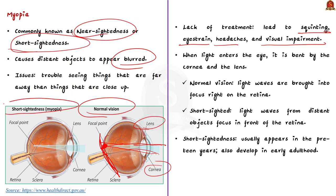Now look at the left side of the image — this is an eyeball with myopia. You can see the light entering the cornea and lens, getting bent, but it is not falling right on the retina. The light is not brought into focus on the retina; instead, the light is falling in front of the retina. The focal point is right in front of the retina. So this is the reason for myopia — the light is focused in front of the retina instead of on it.